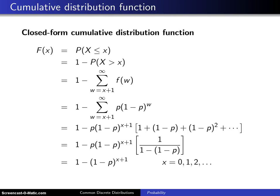Here's a derivation of the cumulative distribution function for a geometric random variable. Capital F of X, which is the cumulative distribution function, is the probability that the random variable X is less than or equal to X by definition.